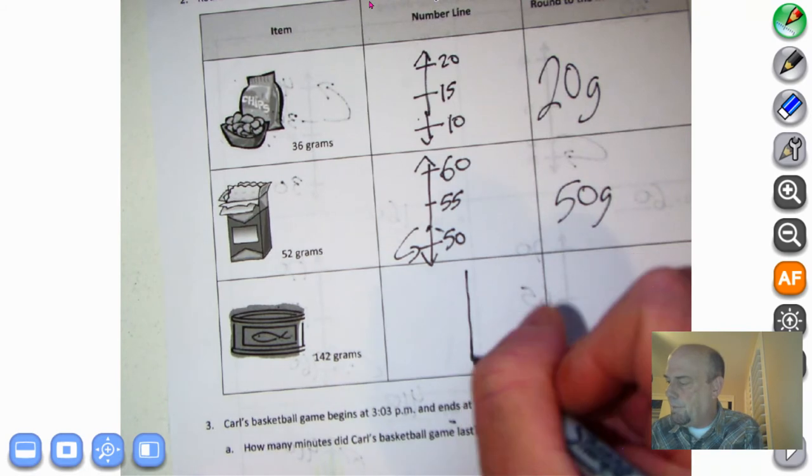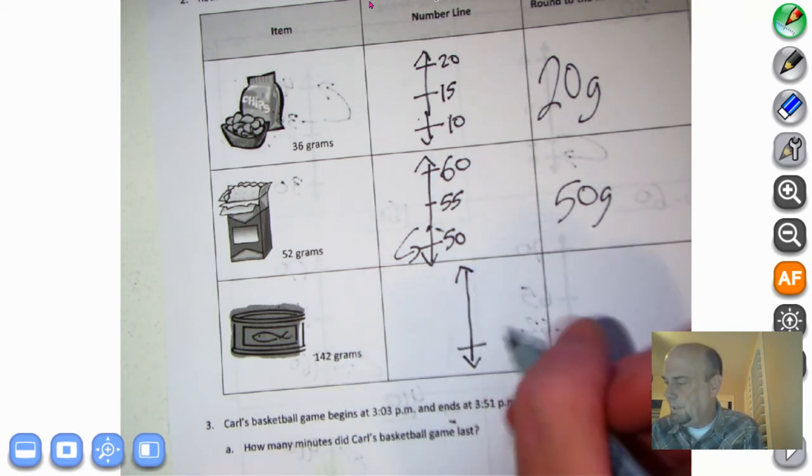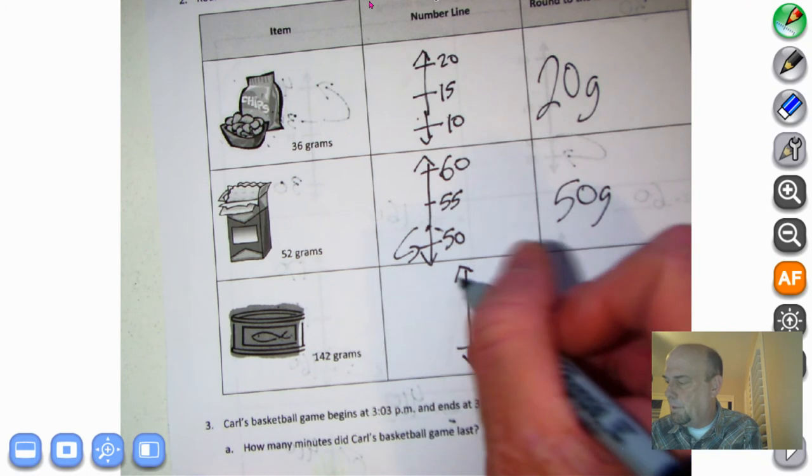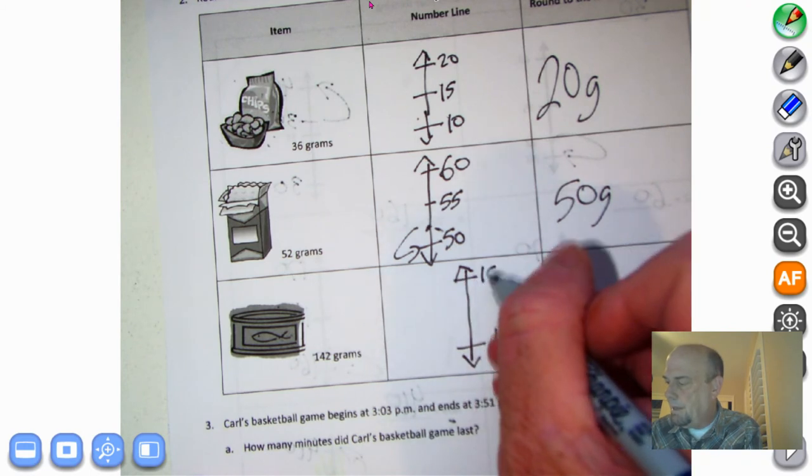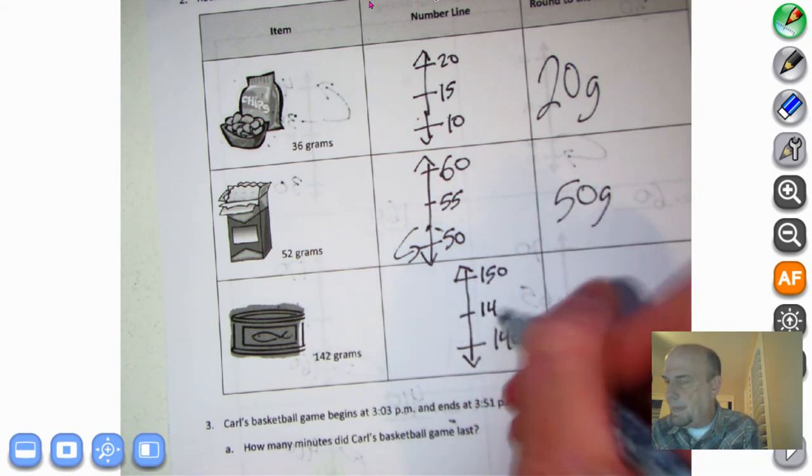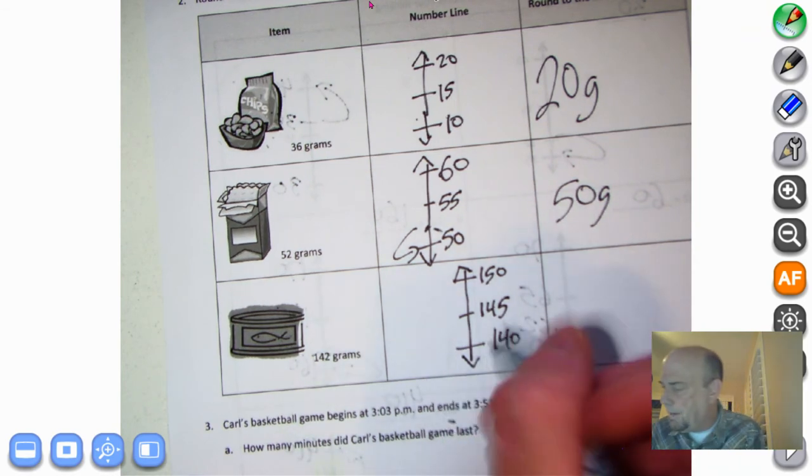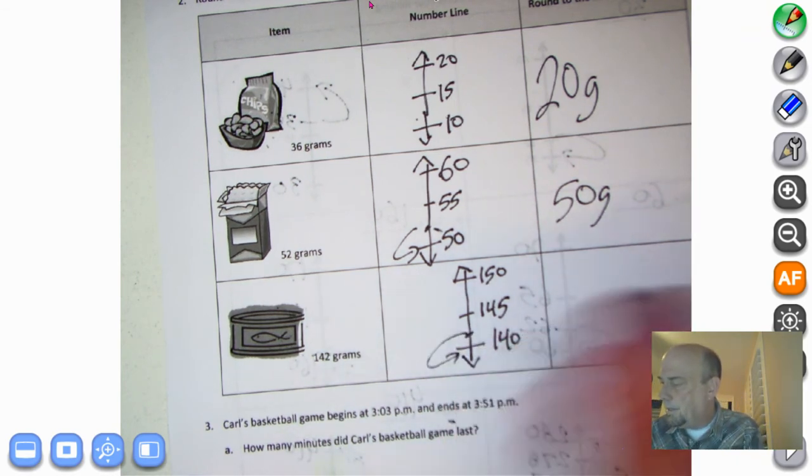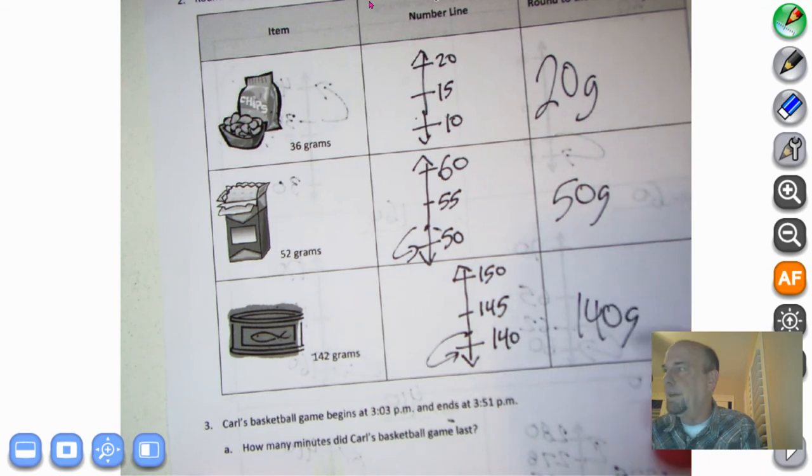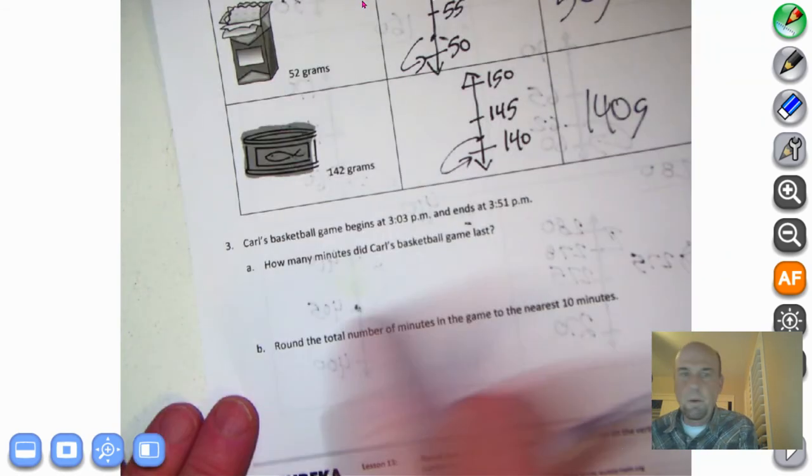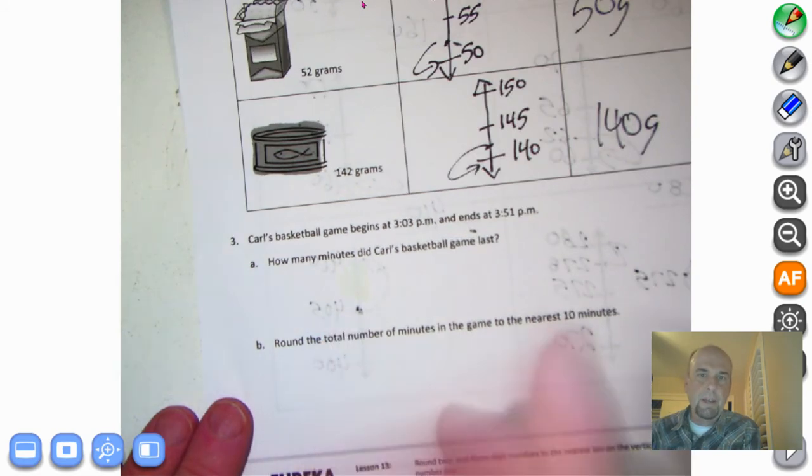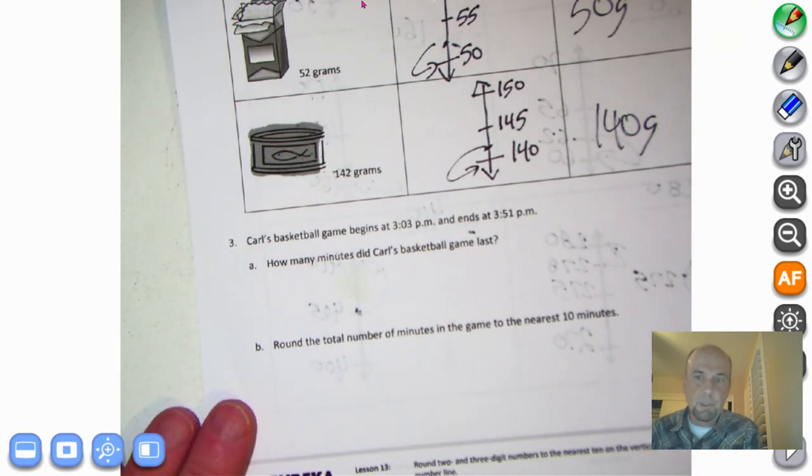Here we have 142 grams. So I'm going to do 140. 10 more is 150. Halfway is 145, right? There's that five showing up again. We have 142 grams. 142 is down here. So we're going to round down to 140 grams. Okay, what I'd like you to do is pause the recording, read this, and then come back and see if you got it right. So pause.